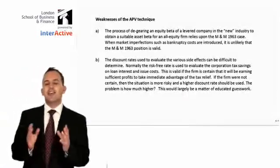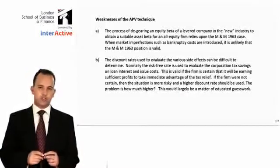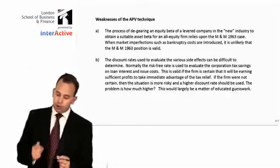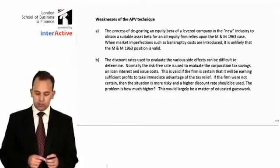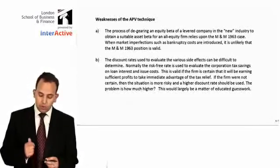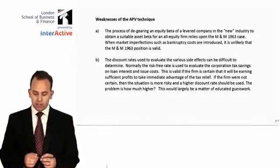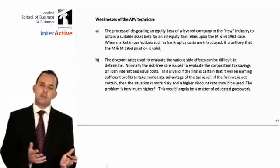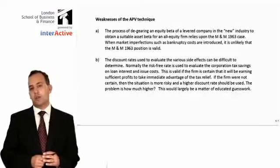However, adjusted present value isn't a perfect model. It does have its weaknesses. Specifically, the process of de-gearing an equity beta of a levered company to obtain a suitable asset beta for an all-equity firm relies upon the Modigliani and Miller arguments. When market imperfections such as bankruptcy costs are introduced, it is unlikely that Modigliani and Miller's proposition will be valid. Any limitations of their propositions are also limitations of APV, and if those propositions don't hold true, the APV calculations are likely to be incorrect as well.